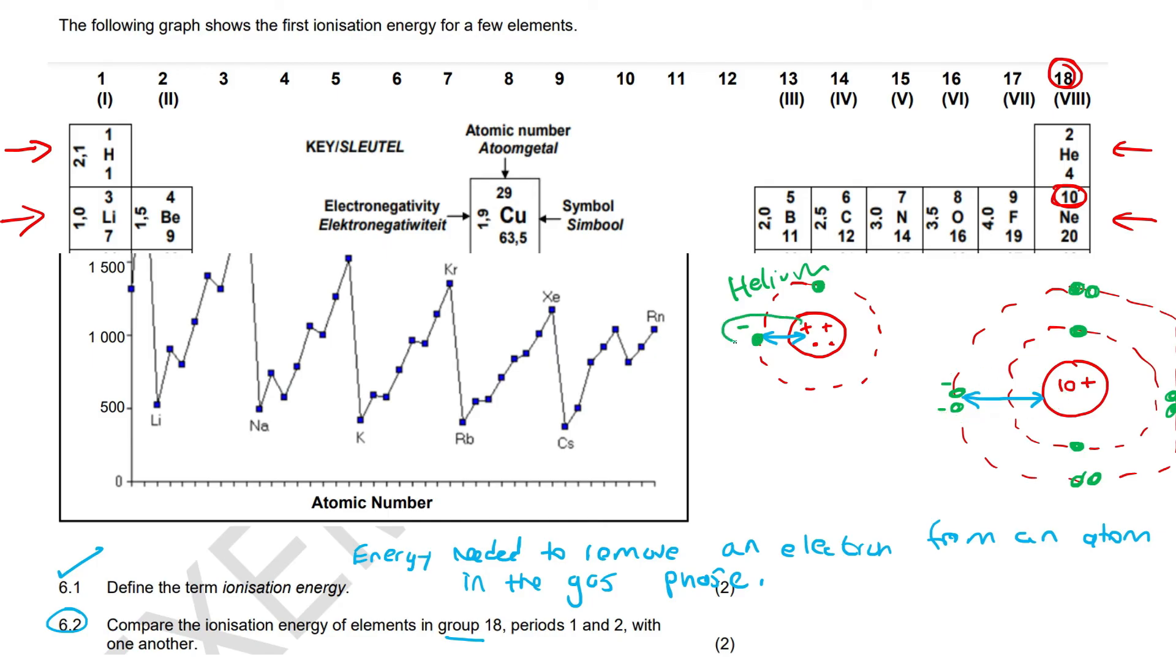Remember that electrons are negative. We know that there is an attraction over here and we know that there is an attraction over here. However, this attraction is going to be much larger than this attraction. Why? Well, it's just because of the distance. If you put two magnets close together it's going to be much stronger than if you put two magnets far apart.